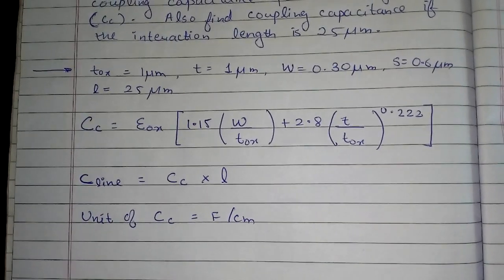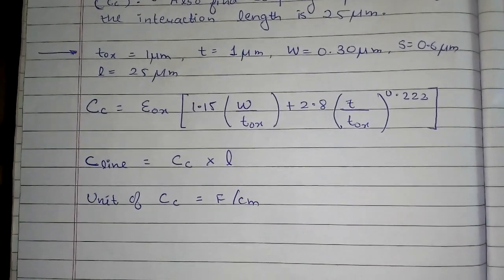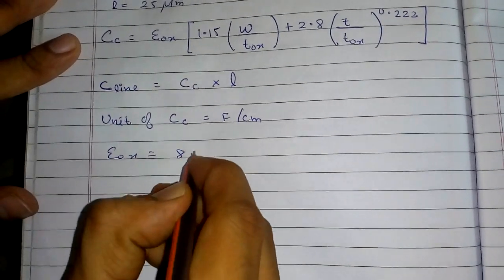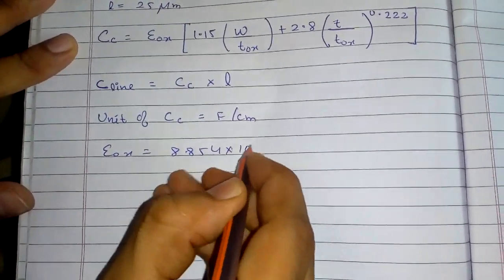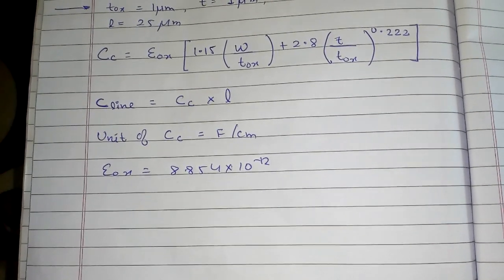The εox value, if it is not given in the question, then you have to take the standard value, that is equal to 8.854 × 10^-12.